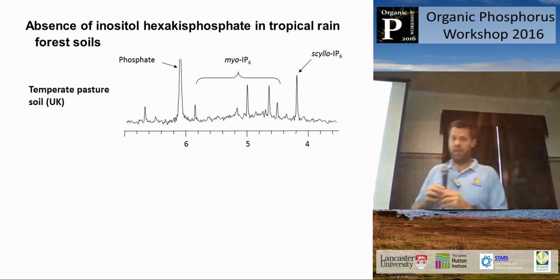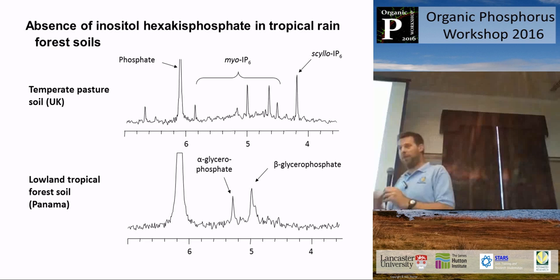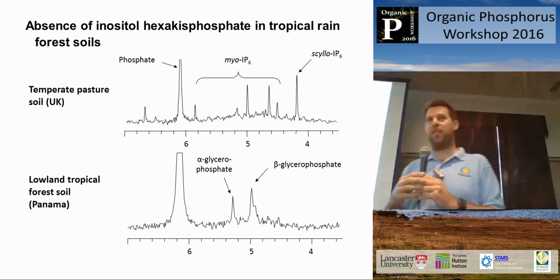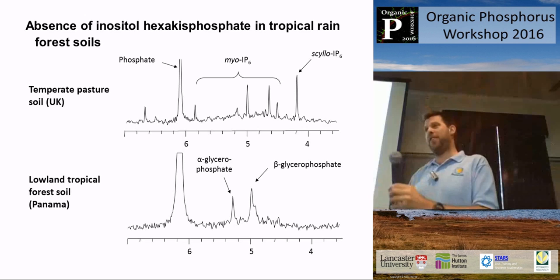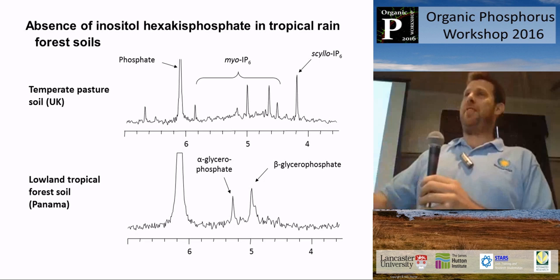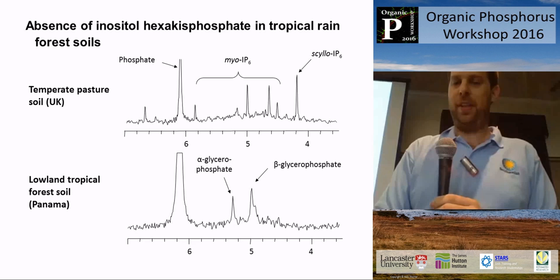For comparison, here's an NMR spectrum of a temperate pasture soil — you can see the phosphate signal but also a series of inositol phosphate peaks: the four signals from myo-IP6 and also neo- and D-chiro-inositol phosphates. So it's full of inositol phosphates. But if we look at a typical soil from Panama, what you can see quite clearly is that we don't find any inositol hexakisphosphate. The organic phosphorus is dominated by phospholipid degradation products and some mononucleotides. I've attributed this to phosphorus being so much in demand that microorganisms with enzymes and organic acid solubilization capacity degrade phytate compounds that would otherwise be very strongly bound in the soil.